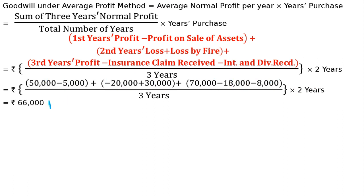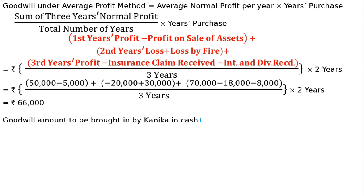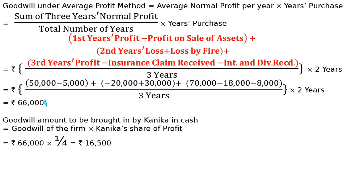The goodwill of the firm is $66,000. Now, as a new partner Kanika is being admitted. She brings in her share of goodwill in cash. Goodwill amount to be brought in by Kanika = Goodwill of the firm × Kanika's share of profit = $66,000 × 1/4 (since Kanika is admitted for a one-fourth share) = $16,500. So Kanika must bring in $16,500 in cash.